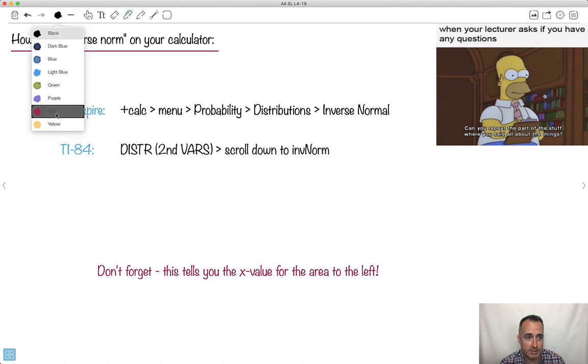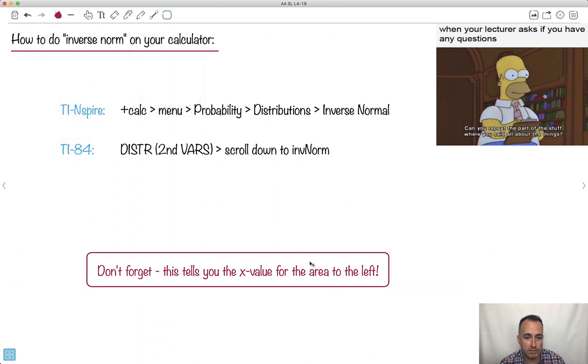But don't forget, I'm just trying to stress this. This is so important. You do this inverse normal, but only for areas to the left. So that means if you're given some sort of function like this right here, it's only to the left that it's doing it for. It'll tell you this x value here.